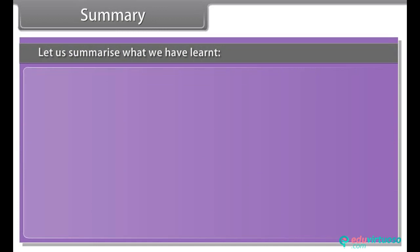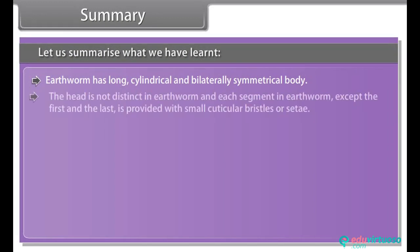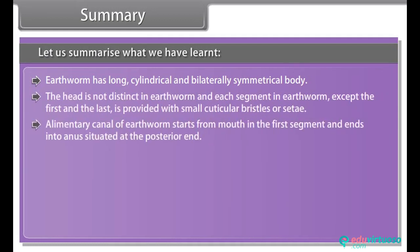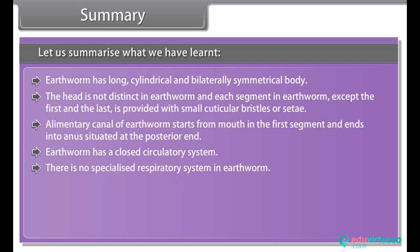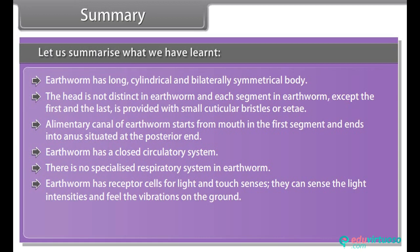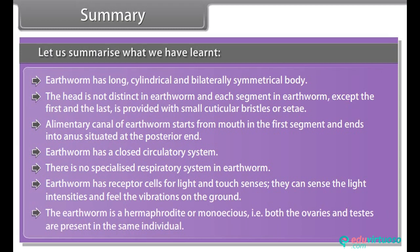Earthworm has a long, cylindrical and bilaterally symmetrical body. The head is not distinct in earthworm, and each segment except the first and last is provided with small cuticular bristles or setae. The alimentary canal of earthworms starts from the mouth in the first segment and ends at the anus at the posterior end. Earthworm has a closed circulatory system and no specialized respiratory system. Earthworm has receptor cells for light and touch senses. The earthworm is a hermaphrodite, with both ovaries and testes present in the same individual.